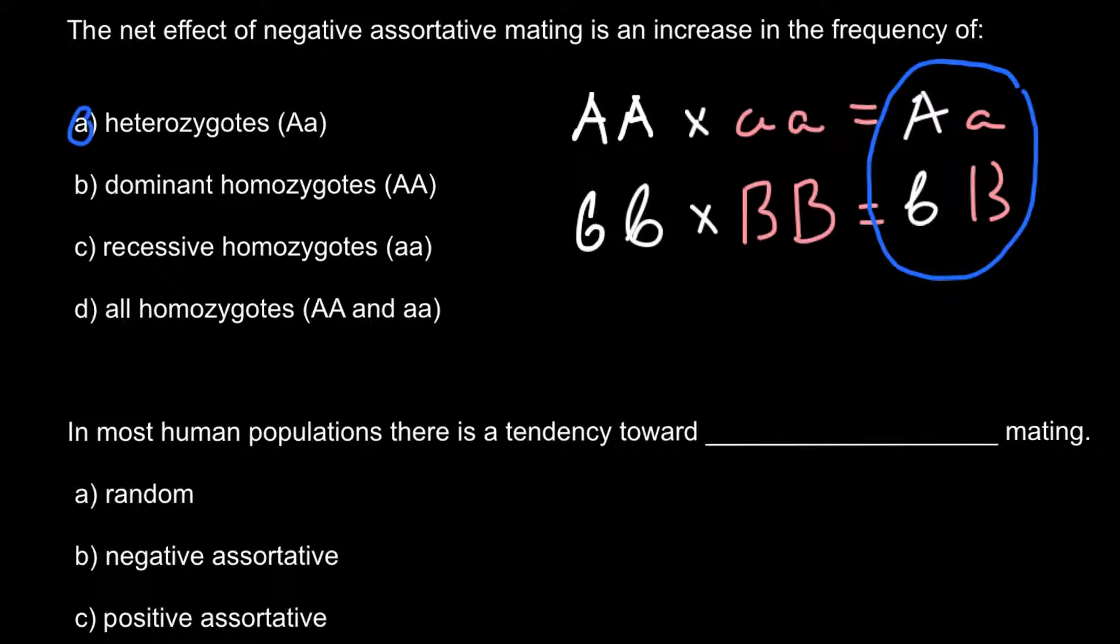Next question. In most human populations there is a tendency toward what kind of mating? Answer A: random mating. Answer B: negative assortative mating. And answer C: positive assortative mating.